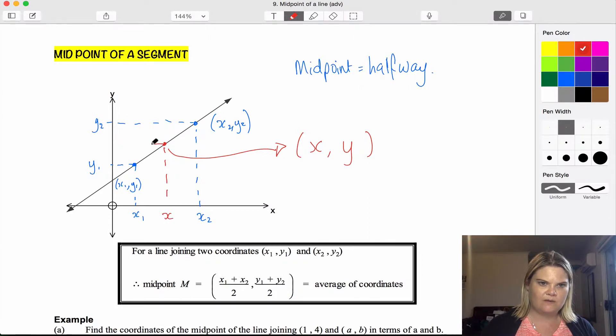And the y values across here. And this x value will be exactly halfway between these two x values, so we could use for this point we could add these two together and divide by two.